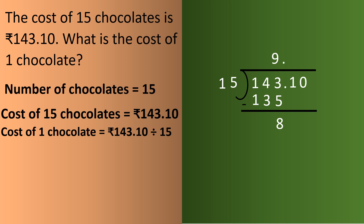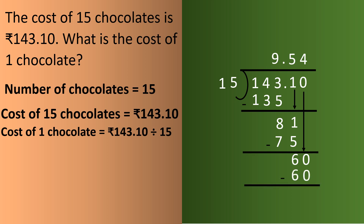We find the table of 15 in 81: 15 fives are 75; subtract, giving 6. Bring down 0: 15 fours are 60; after subtraction we get 0. So the quotient is 9.54, which is our answer. The cost of one chocolate is rupees 9.54.